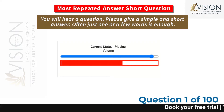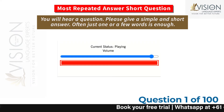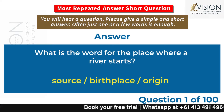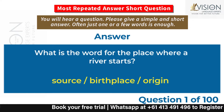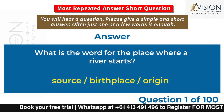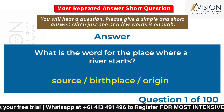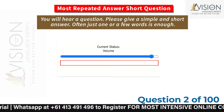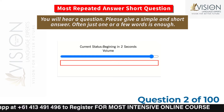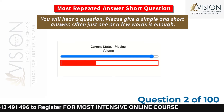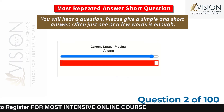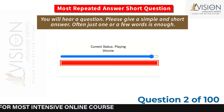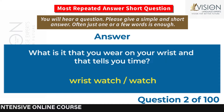What is the word for the place where a river starts? Source, birthplace, origin. What is it that you wear on your wrist and that tells you time? Wristwatch, watch.